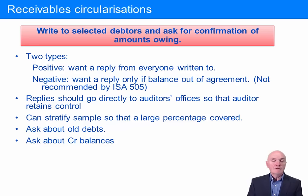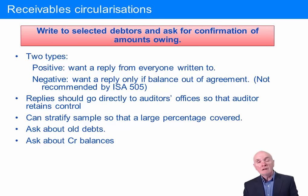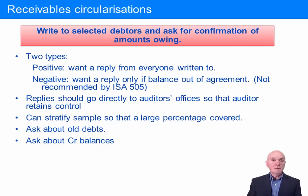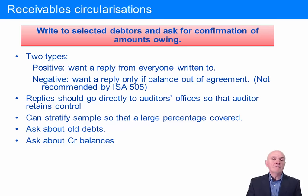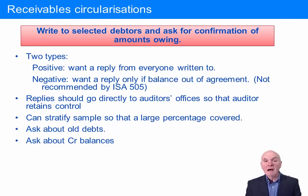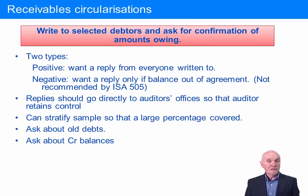There are two types of circularization: positive and negative. A positive circularization is where you want the customer to reply whether or not they agree with the balance. If they agree, they will just sign the letter and post it back saying they agree. If they don't agree, they will state what balance they have. Any differences, apart from errors, you hope can be explained by timing differences.